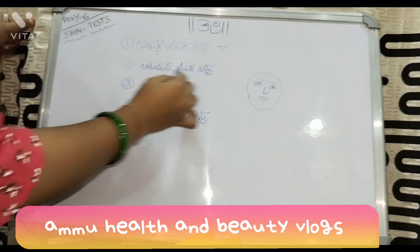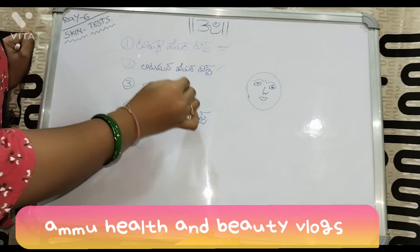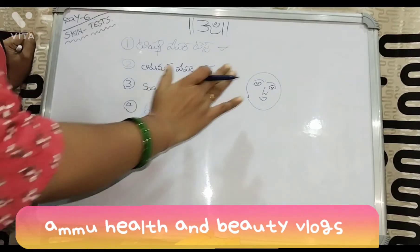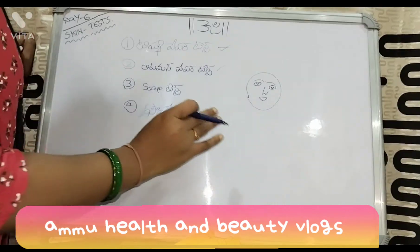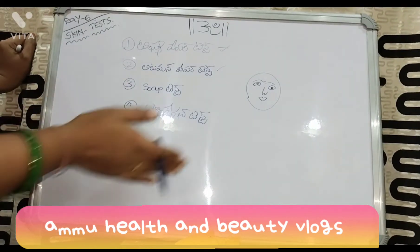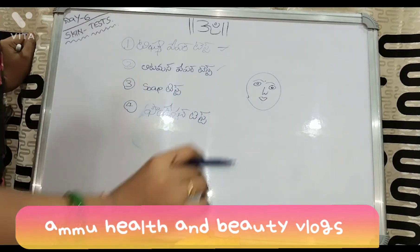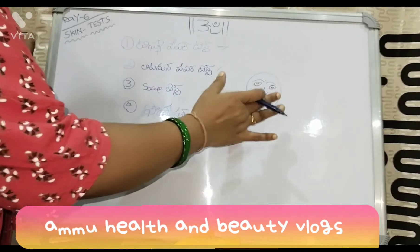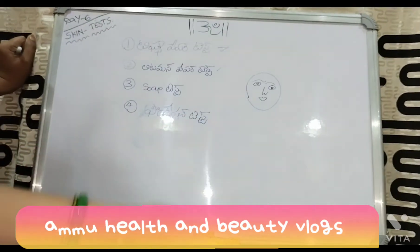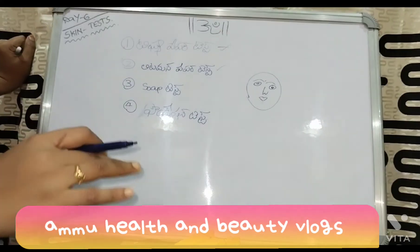Now let's test the litmus paper. If the face shows a blue result, that indicates dry skin. This combination of results tells us the skin type.